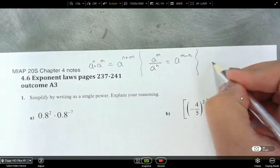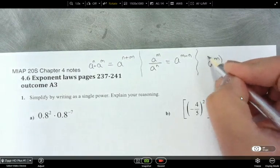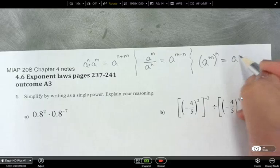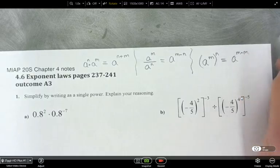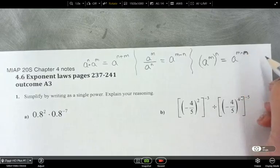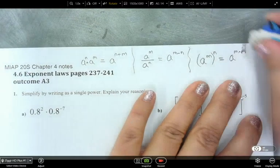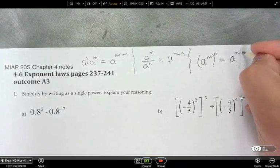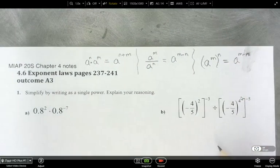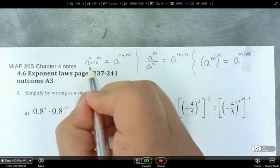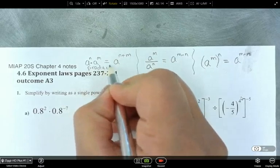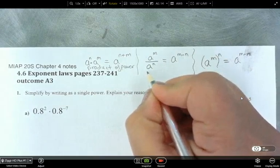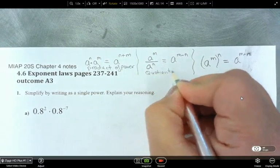Now, what if we had A to the power of M, and then we have that raised to the power of N? What do we do? We multiply the exponents together. So what is this called? Product of power. What is this called? Quotient of power. And then what do we call this one? Power of power.